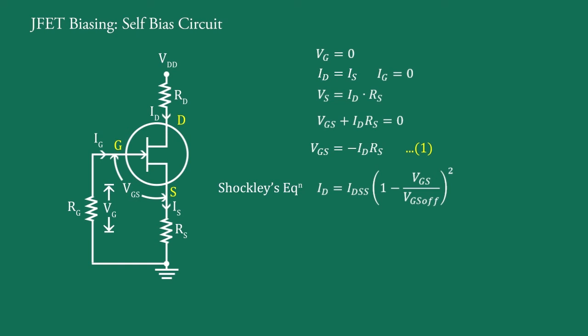Now ID is calculated using Shockley's equation, that is ID equals IDSS into bracket 1 minus VGS upon VGS(off) all raised to power 2. Now applying Kirchhoff's law at output section, we get VDD equals ID RD plus VDS plus IS RS.